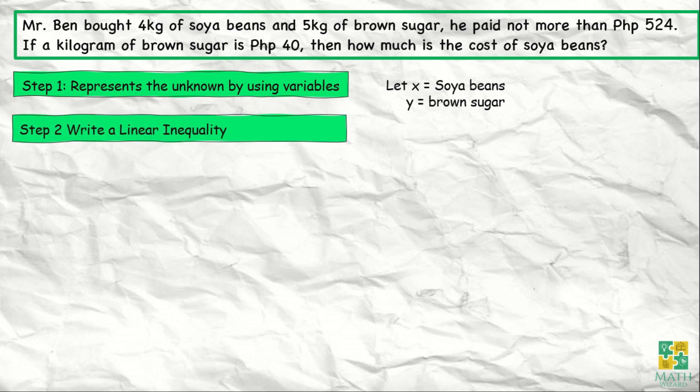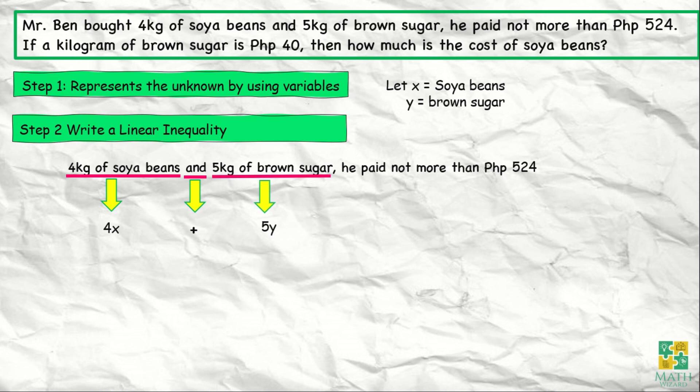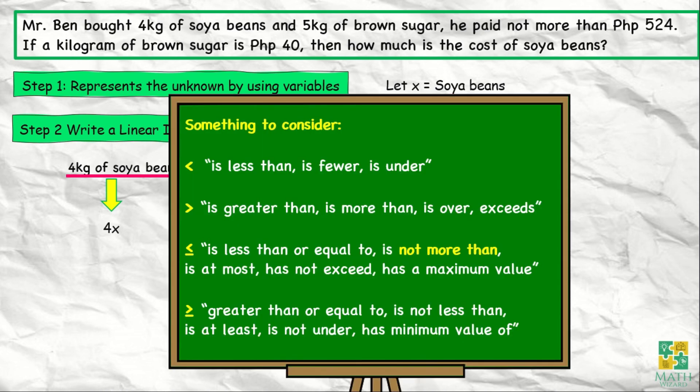For step number 2, we need to write a linear inequality. Our problem says 4 kilograms of soya beans and 5 kilograms of brown sugar, he paid not more than 524 pesos. We translate this into a linear inequality. We start with 4 kilograms of soya beans becomes 4x, and 5 kilograms of brown sugar becomes 5y. He paid not more than.